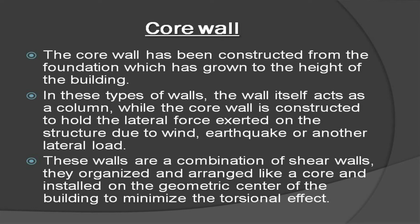Core wall: the core wall is constructed from the foundation and grows to the height of the building. In these types of walls, the wall itself acts as a column. The core wall is constructed to hold the lateral forces exerted on the structure due to wind, earthquake, or other lateral loads. These walls are a combination of shear walls, organized and arranged like a core, and installed at the geometric center of the building to minimize the torsional effect.